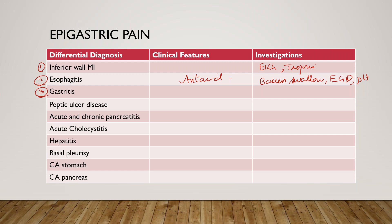Third is gastritis. Gastritis can cause epigastric pain after meals, and the patient can have mild tenderness on palpation. In terms of workup, we can consider EGD if it is chronic and not improving with medication, to confirm the diagnosis.